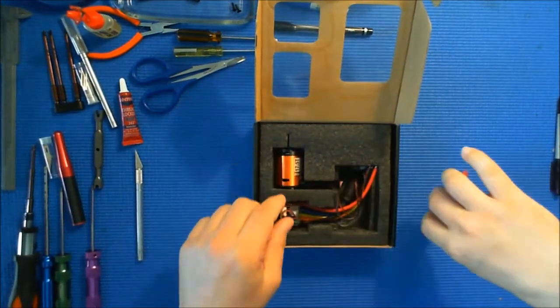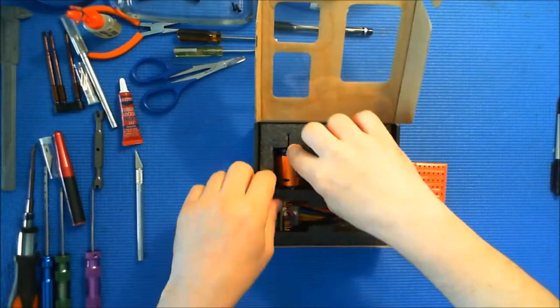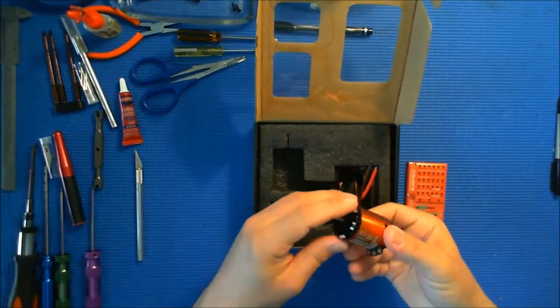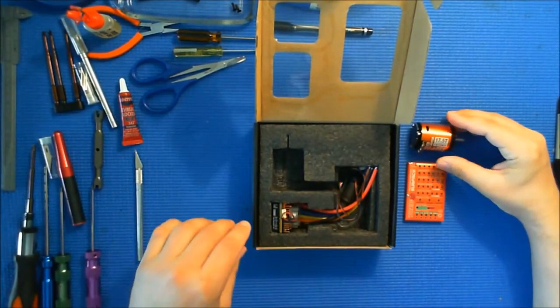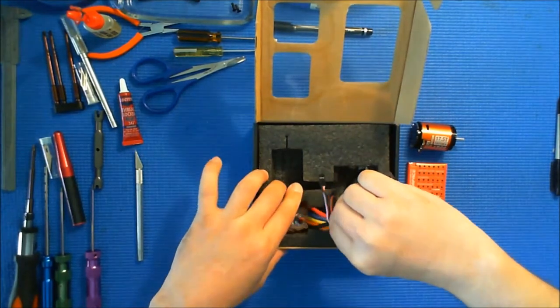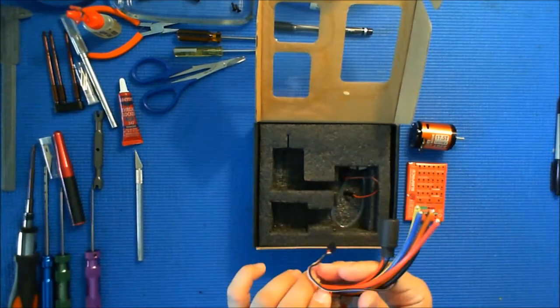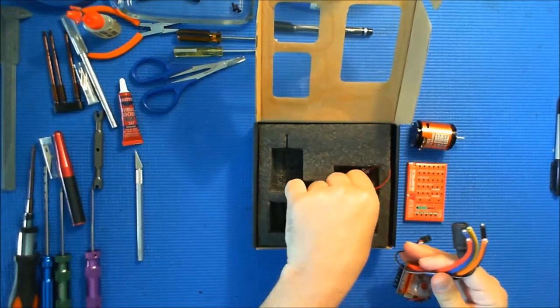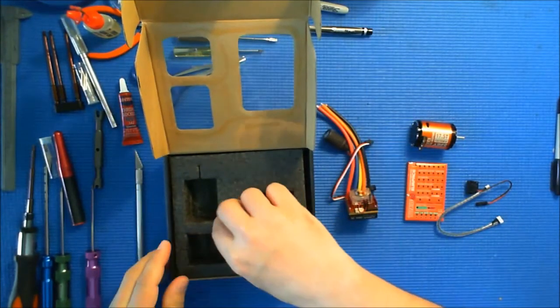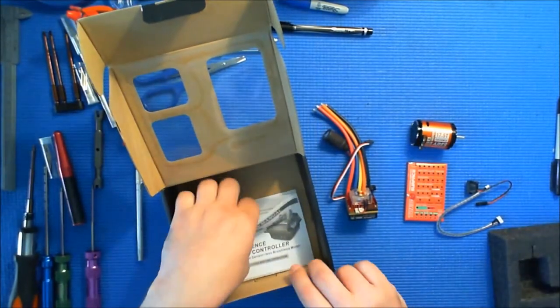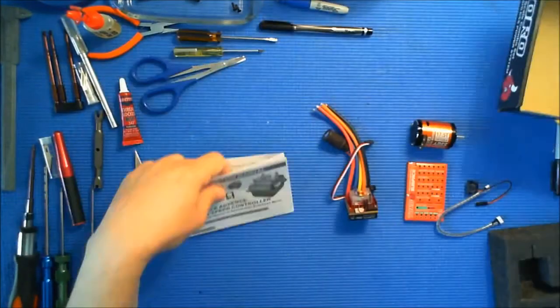I'm purchasing this item for a 1/10 scale touring car that I'm going to be running at a local club. They require a 17.5 turn motor for the class and they run blinky mode on the speed control, but I wanted to have a few extra options.